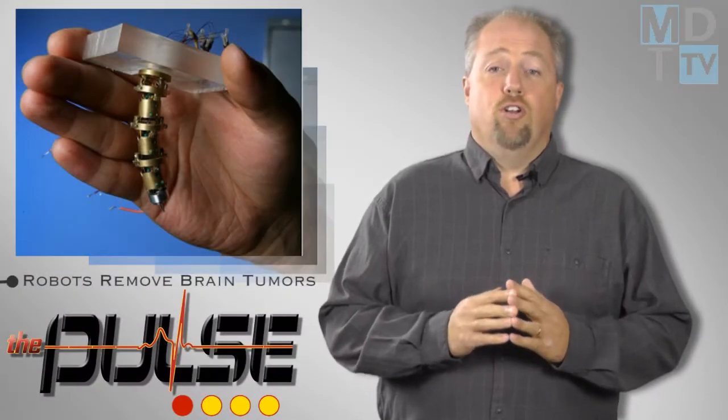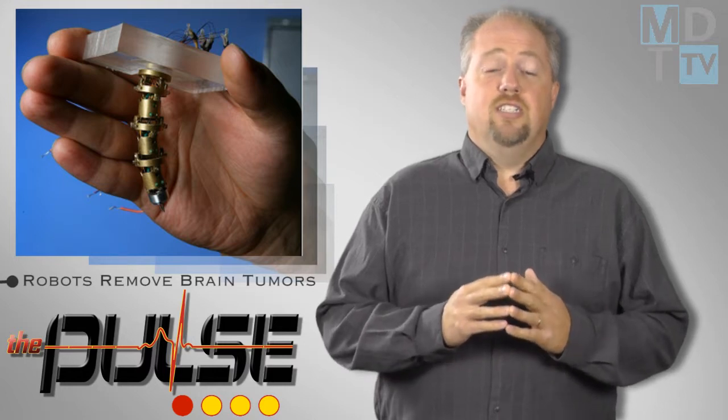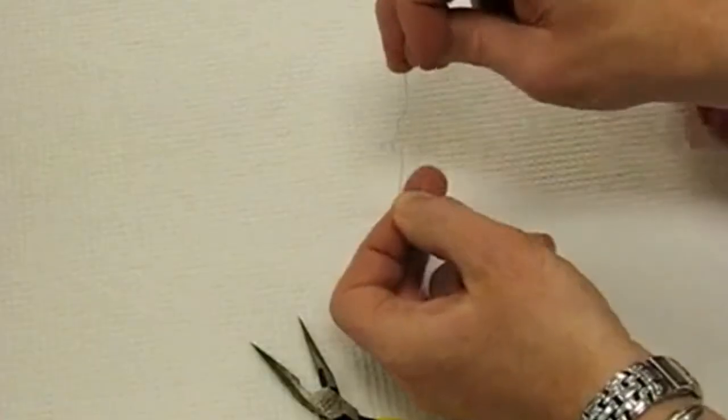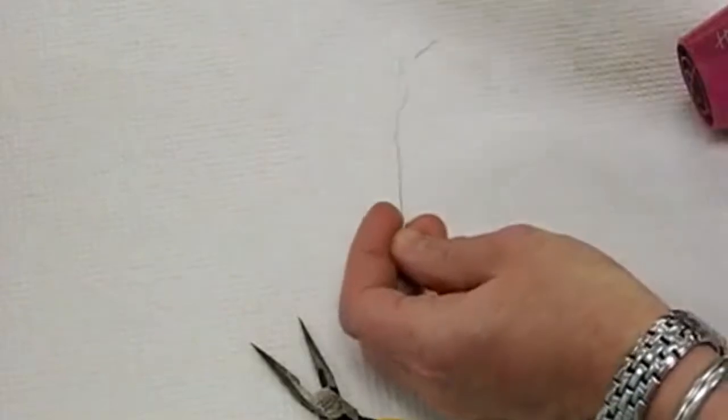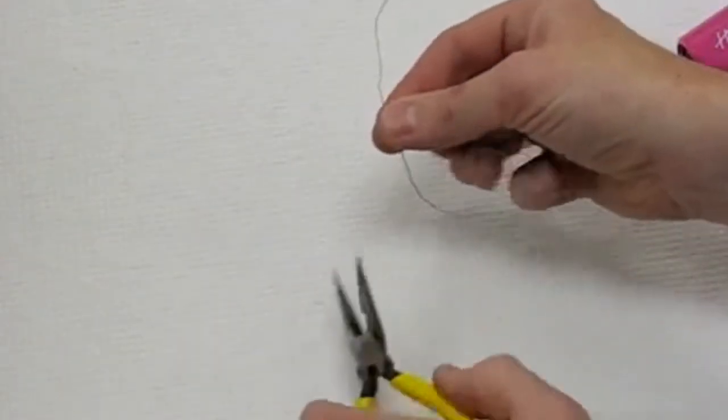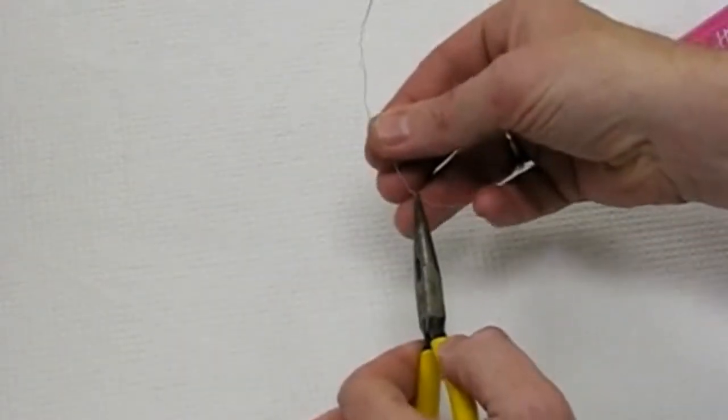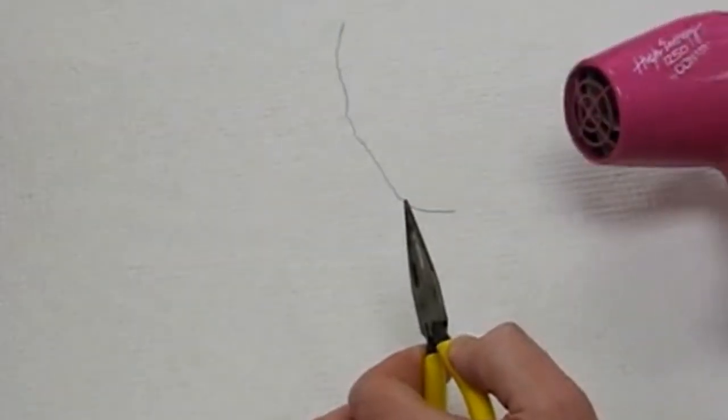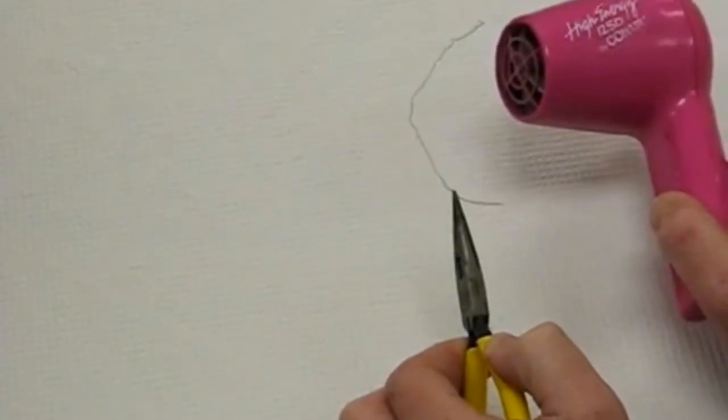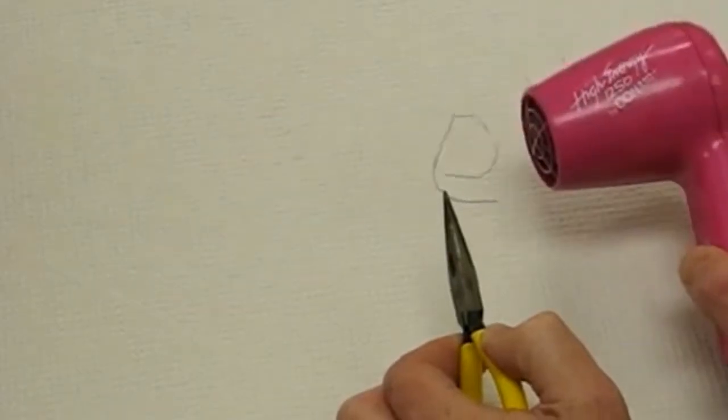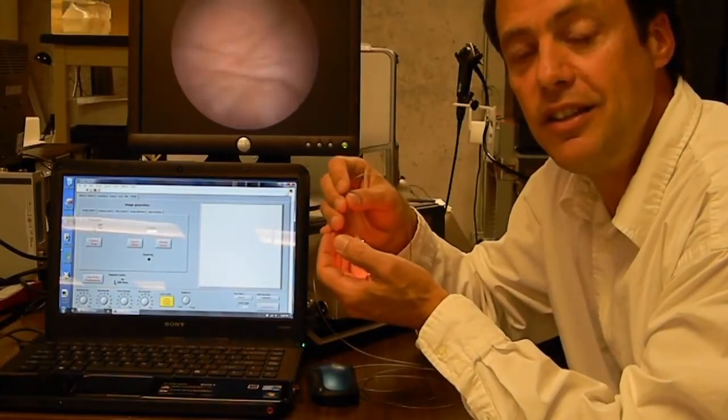Engineers are teaming up with neurosurgeons to develop technologies that enable less invasive image-guided removal of hard-to-reach brain tumors. Their tech combines novel imaging techniques that allow surgeons to see deep within the brain during surgery using robotic systems that enhance the precision of tissue removal.